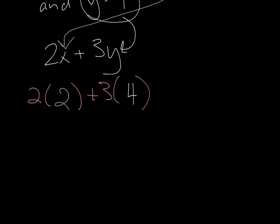And now I use my order of operations. I have multiplication. 2 right next to the parentheses means 2 times 2. So 2 times 2 is 4. Plus 3 times 4 is 12. And now 4 plus 12 is 16.